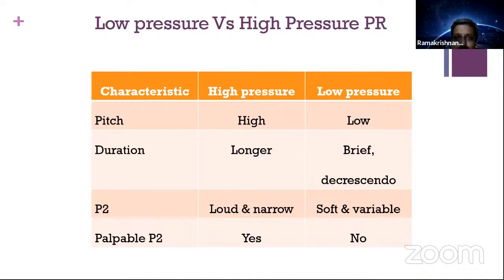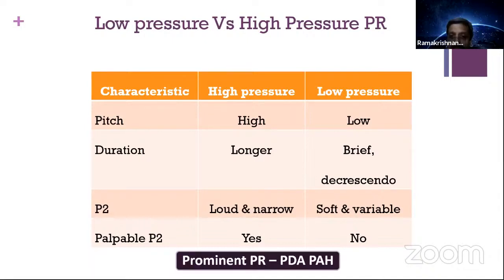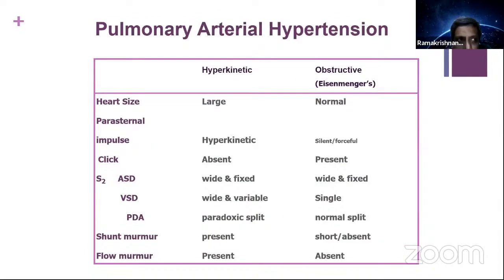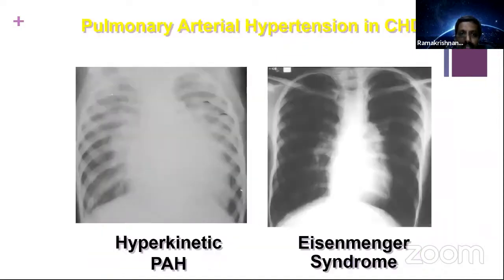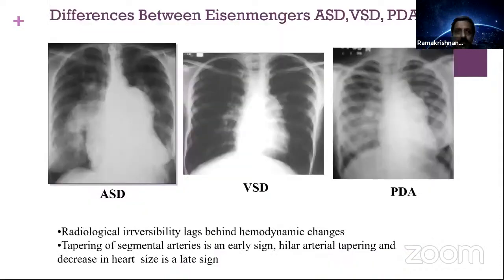Another common question: hyperkinetic PH versus obstructive PH. Hyperkinetic PH will have a larger cardiac size, shunt murmur, flow murmur, and hyperkinetic impulse. ASD will be wide and fixed split; VSD will be wide and variable split; PDA could have paradoxical split due to increased flow. In Eisenmenger syndrome, the opposite is found. The differences between ASD, VSD, and PDA Eisenmenger: ASD will have a larger heart, larger prominence of pulmonary artery, and PA dilatation. Differential cyanosis is present in PDA Eisenmenger.